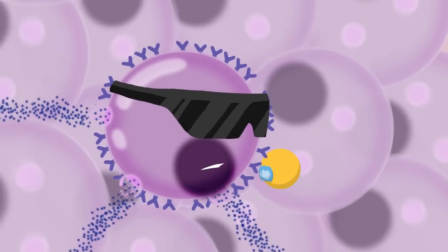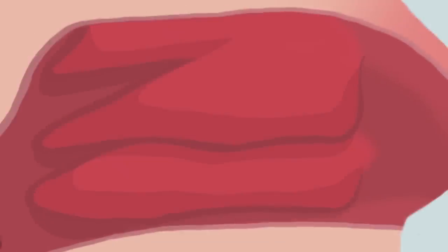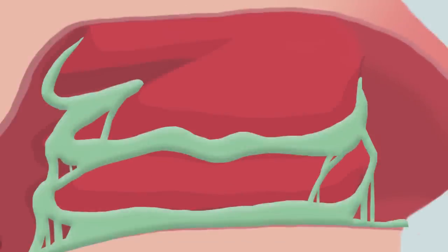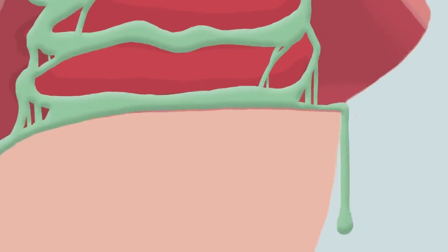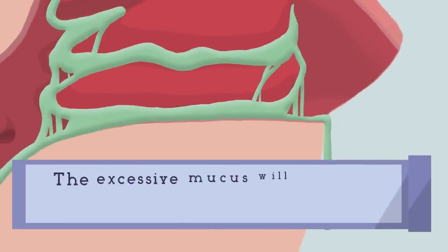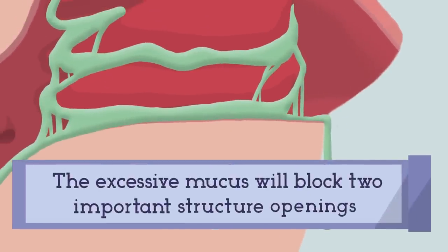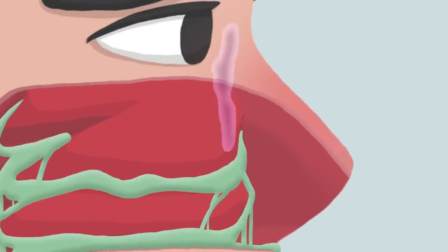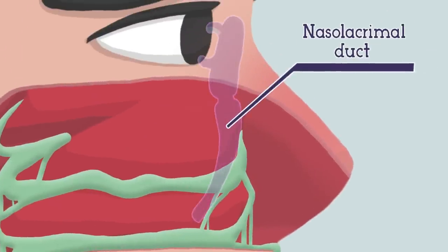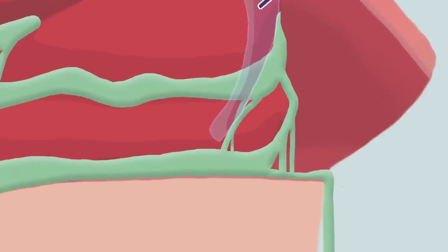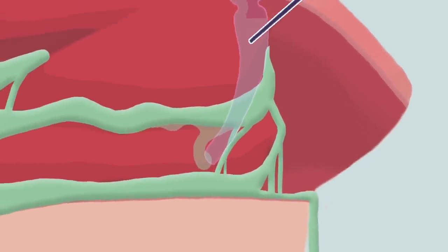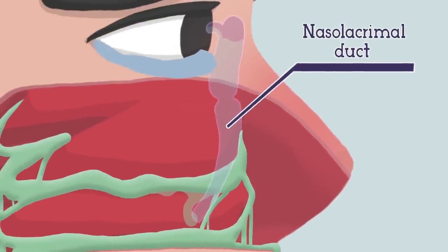Histamine will cause inflammation and swelling of the nasal mucosa, which will then cause excessive mucus production, resulting in nasal drip. This excessive mucus production will block two very important structures opening into the nose. First, the nasolacrimal duct, whose purpose is to drain tears from the eyes into the nose. Once blocked by excessive mucus production from allergic rhinitis, you will start having watery eyes.